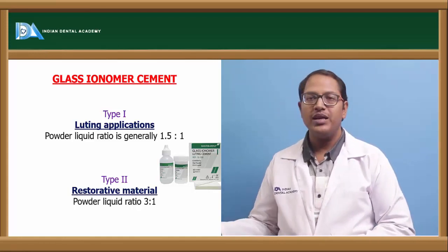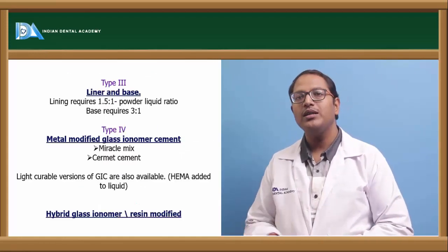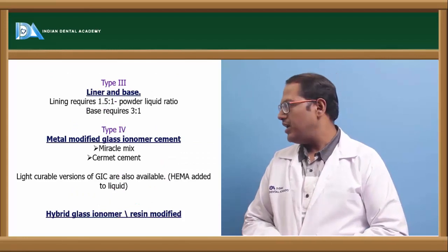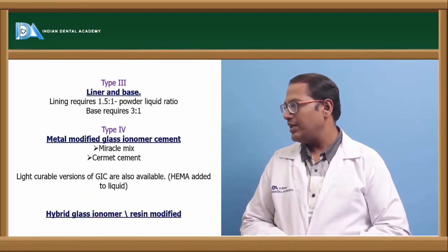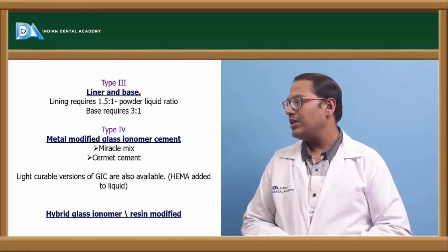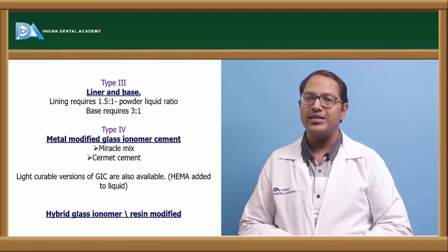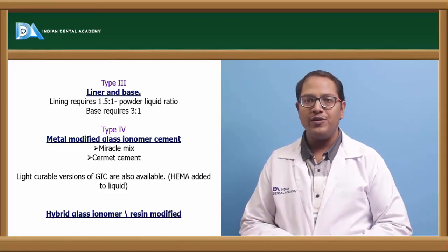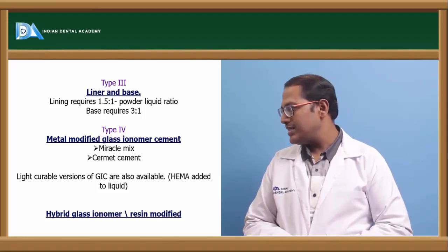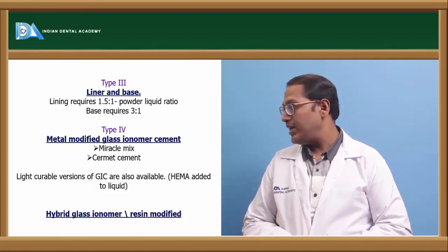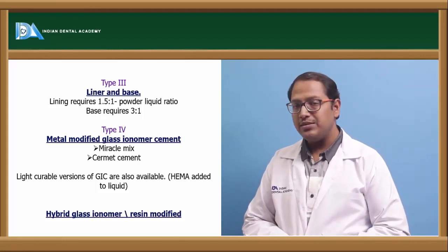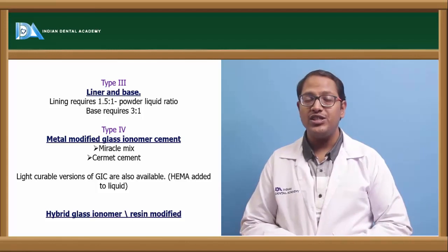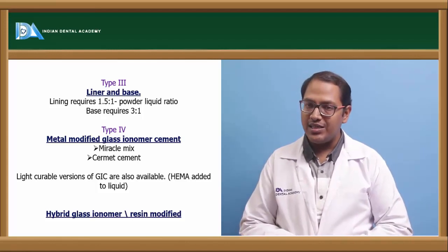Further GIC types include Type 4, which is metal-modified glass ionomer cement — also called miracle mix — and light-curable varieties of GIC resins, as well as hybrid glass ionomers and resin-modified glass ionomer cements where a resin matrix has been added.